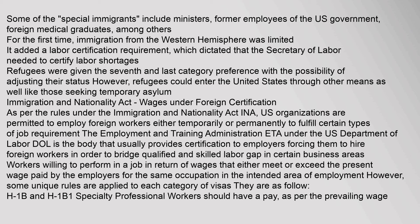Under the Immigration and Nationality Act (INA), U.S. organizations are permitted to employ foreign workers either temporarily or permanently to fulfill certain types of job requirements. The Employment and Training Administration (ETA) under the U.S. Department of Labor is the body that usually provides certification to employers, allowing them to hire foreign workers in order to bridge qualified and skilled labor gaps in certain business areas. Workers must be willing to perform a job in return for wages that either meet or exceed the prevailing wage paid by employers for the same occupation in the intended area of employment. Some unique rules are applied to each category of visas.